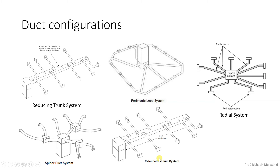In the extended plenum system, here you can see this is the plenum and this is a trunk. We have branches, and here you can see the dimension is the same in the extended plenum system. Next if you consider the spider duct system: this is the supply plenum and from here we have these branches, also called runouts, which are connected to air terminal units. So this is called spider duct system.